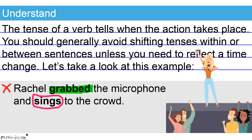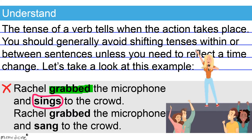Change 'sings' to its simple, singular, third person, past tense verb form to restore consistency. We've changed 'sings' to 'sang' — simple, singular, third person, past tense verb form. We have restored consistency in this sentence, and this new verb form is correct.